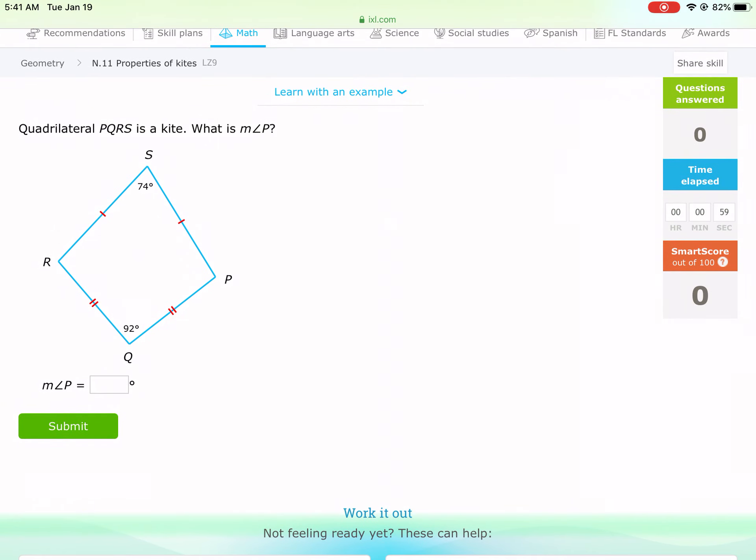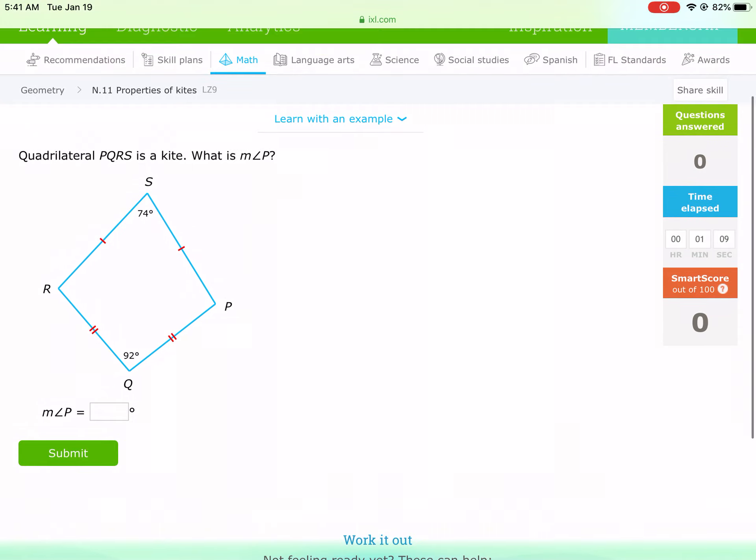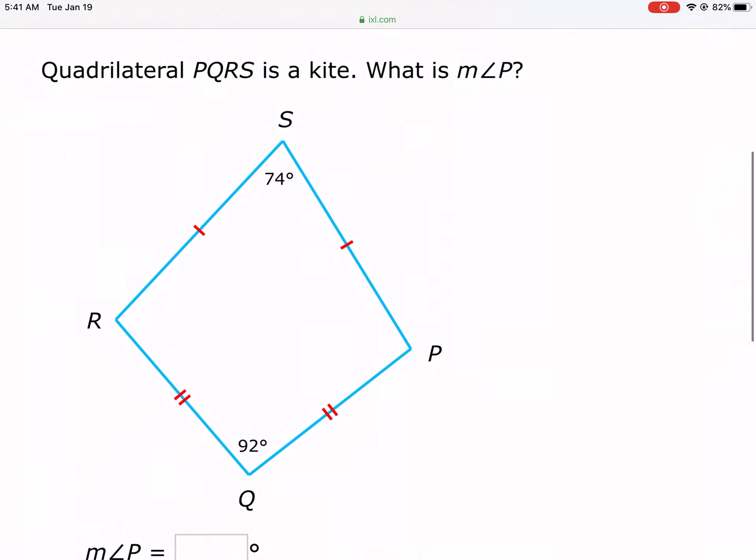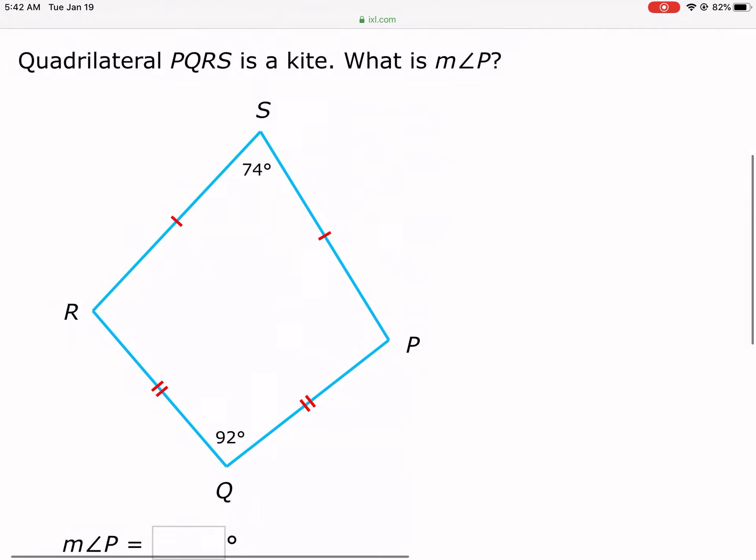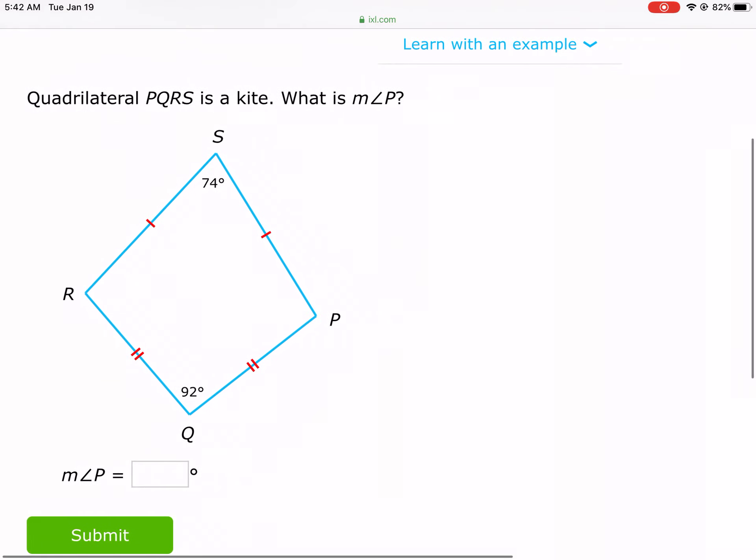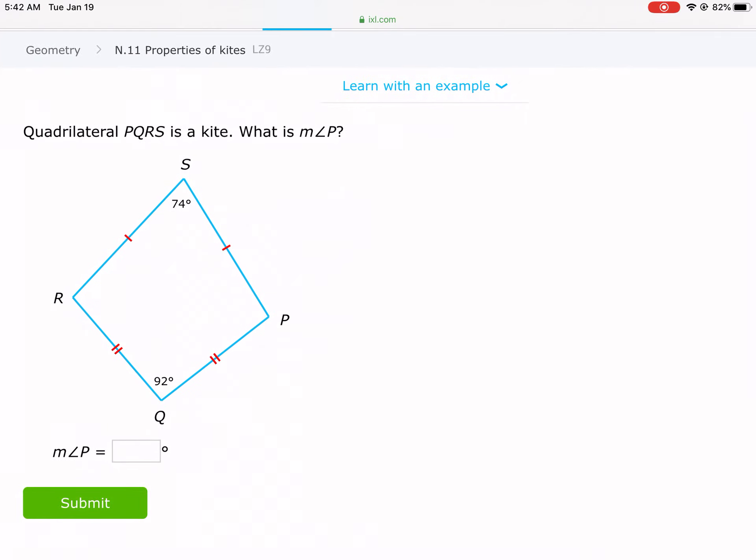It says quadrilateral PQRS, very creative name, is a kite. No surprises there. What is the measure of angle P? All right, one of the cool things about kites. We have here two angles that are already given, and if you were to draw a line here across connecting R and P, it would create two isosceles triangles.